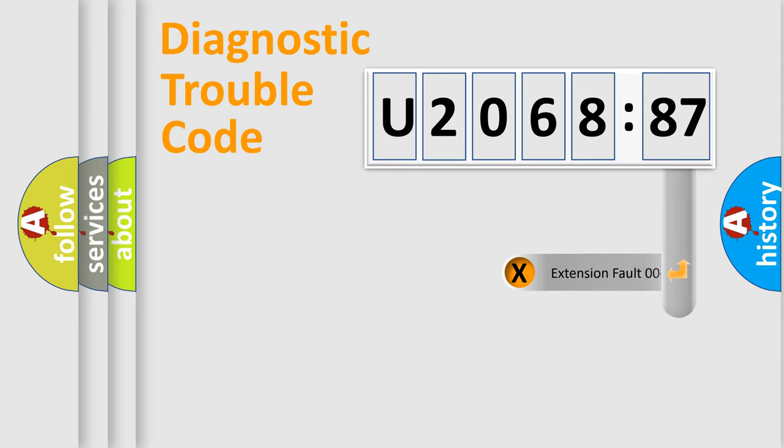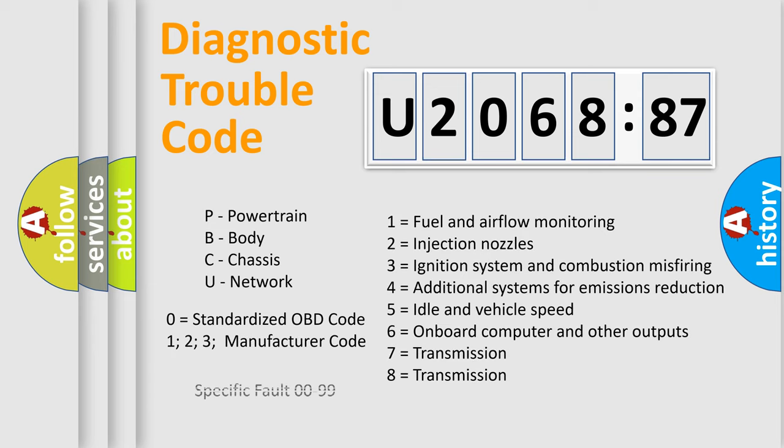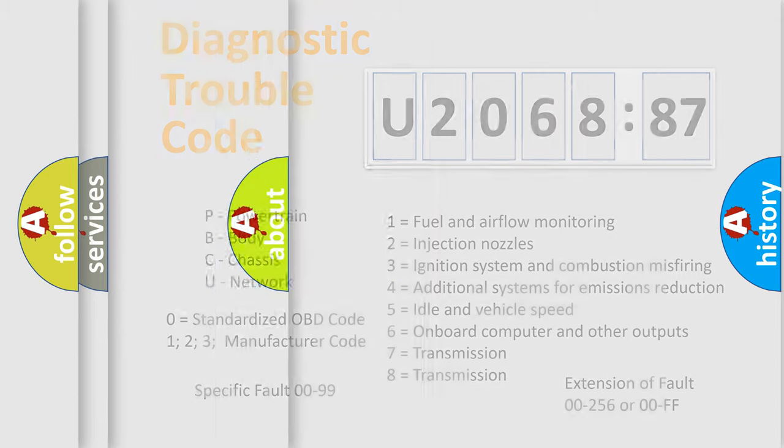Only the last two characters define the specific fault of the group. The add-on to the error code serves to specify the status in more detail, for example, a short to ground. Let's not forget that such a division is valid only if the second character code is expressed by the number zero.